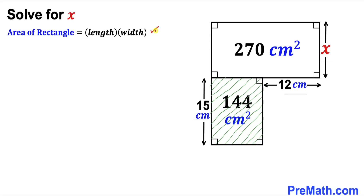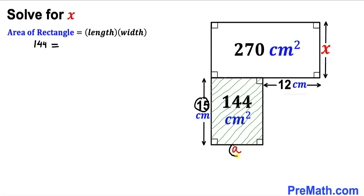Area equals length times width. Let's assume the unknown side length is 'a' centimeters. Filling in the formula: 144 equals 15 times a, where 15 is one side length and a is the other side length.